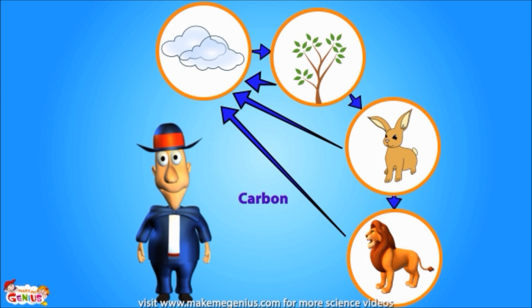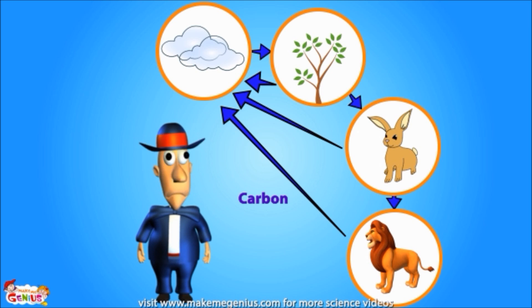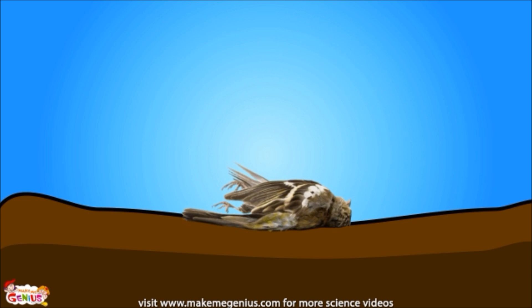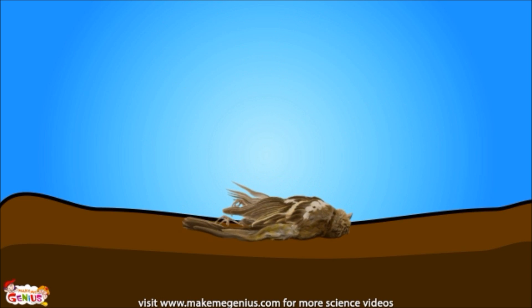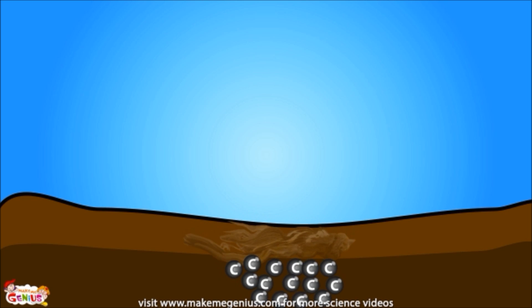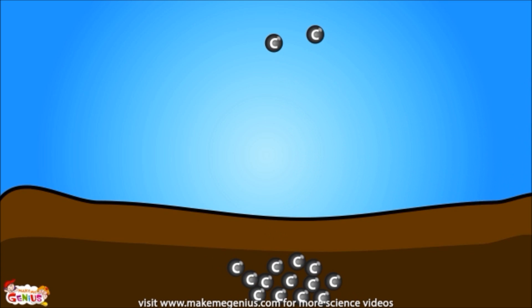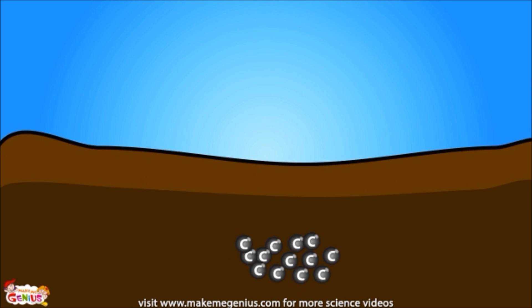Do you know what happens to all that carbon stored in a body when it dies? When a plant or animal dies, most of the stored carbon goes back into the soil. Some of it goes back into the air, but most of it gets trapped in the soil.